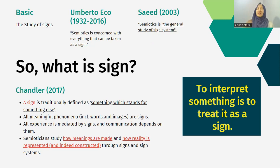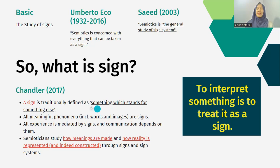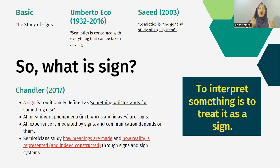Lantas apa itu tanda? Chandler tahun 2017 mencoba menjelaskan: a sign, atau sebuah tanda, is traditionally defined as something which stands for something else. Ingat rumus tanda: sesuatu yang stands for, yang mewakili, sesuatu yang lain. Contoh, misalkan ada kata 'love' — kata love itu bisa diartikan atau mewakili perasaan, the feeling of affection. Begitu contohnya.